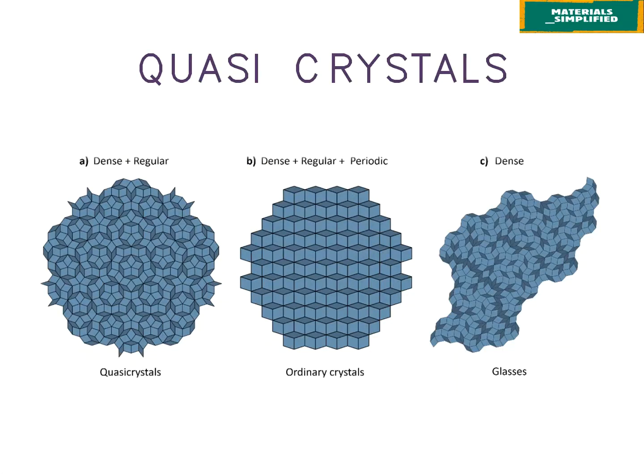What I have here is glasses, which are amorphous — no order, no periodicity. In the middle we have ordinary crystals, which are ordered and periodic. On the left we have quasicrystals, which are ordered yet lack periodicity.